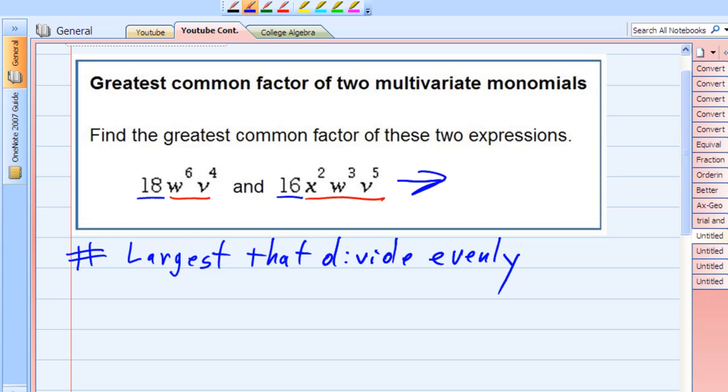So looking at the 18 and the 16, that's our numerical part, the biggest number that will divide evenly into both 18 and 16 is 2. So that gives us our numerical part.